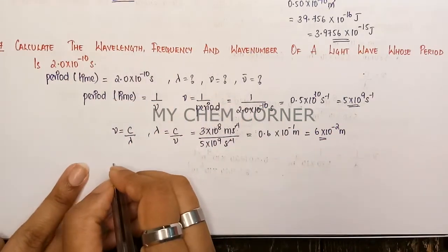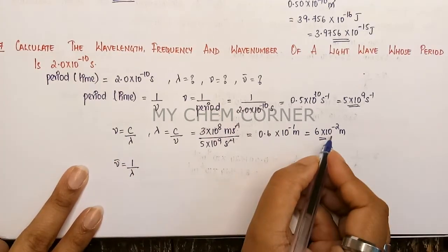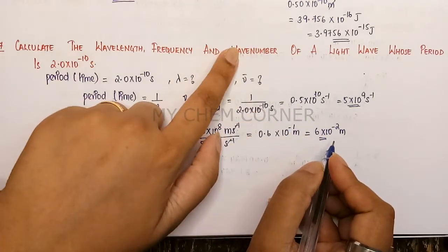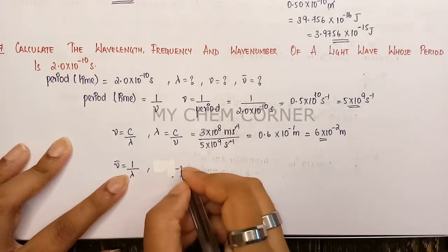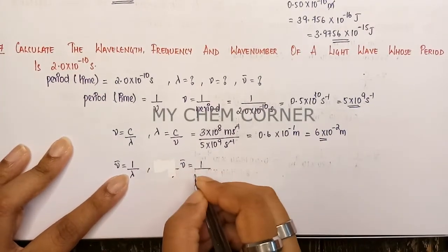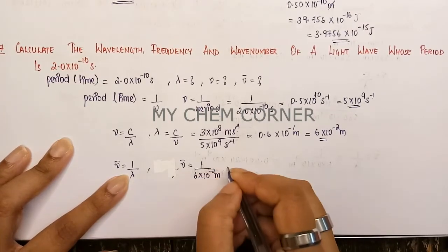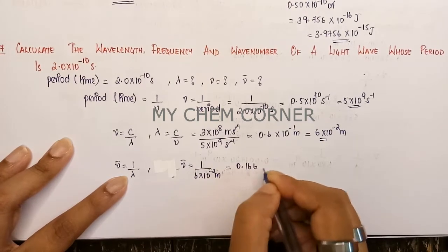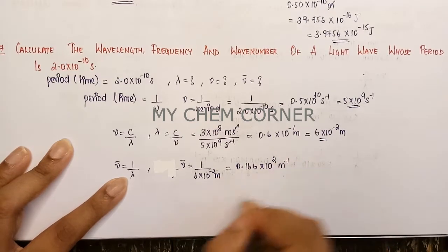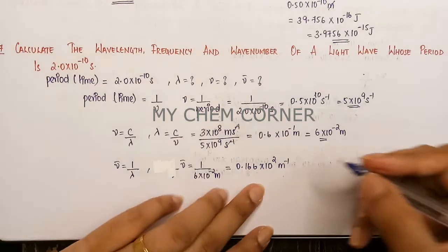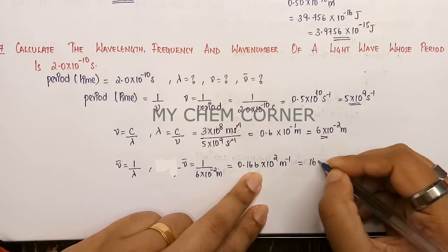The last value to find is the wave number, which equals 1 / λ. Using the wavelength we just found: wave number = 1 / (6 × 10⁻² meters) = 0.166 × 10⁺² meters⁻¹. Shifting the decimal two places gives us 16.6 meters⁻¹.